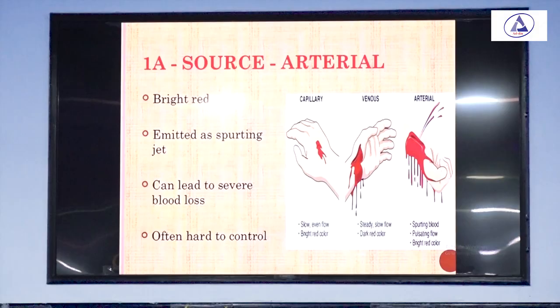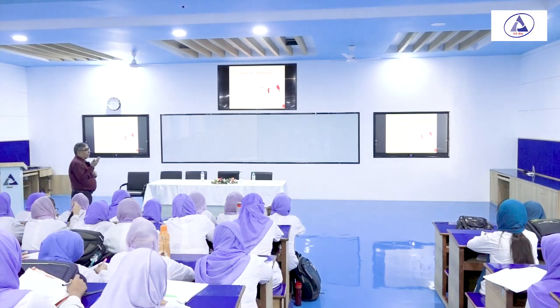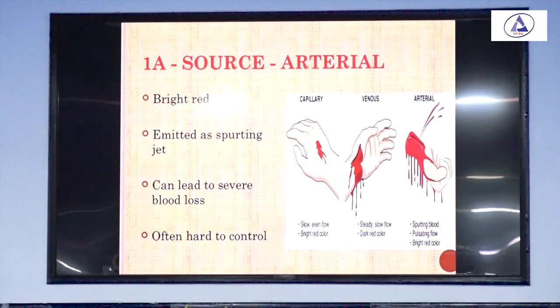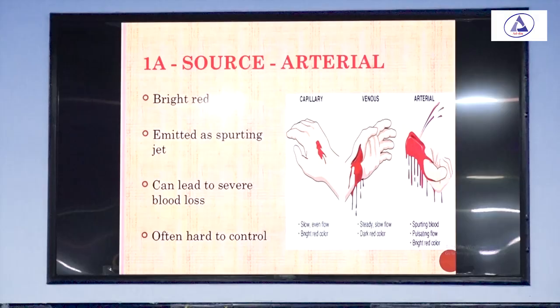Now what about venous blood? The venous blood — at the same site of injury — is dark red in color, not bright red. And venous blood has a slow, steady flow, whereas arterial blood is a spurting jet with pulsation.